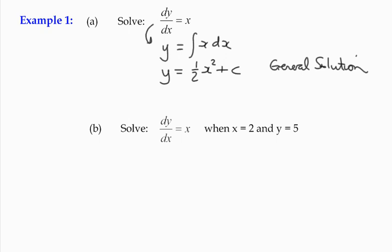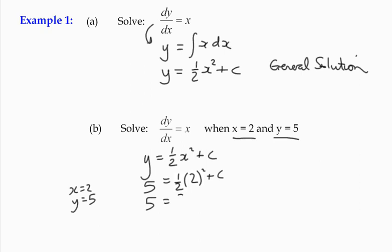However, we're told in part b here that we've got the same equation, dy by dx equals x, when x equals 2 and y equals 5. So I'm just going to take the solution to my differential equation that I generated earlier. And of course, what we can do is say that at that point, when x is 2, y equals 5. In order for the equation to hold, then 5 equals 1 half times 2 squared plus c, 5 equals 2 plus c, therefore c equals 3.